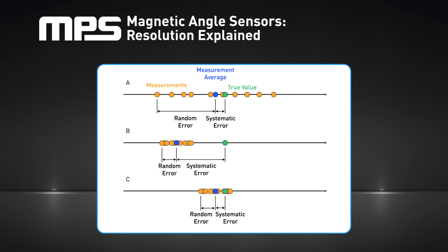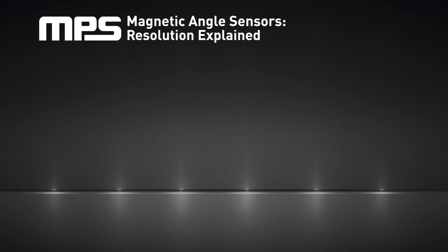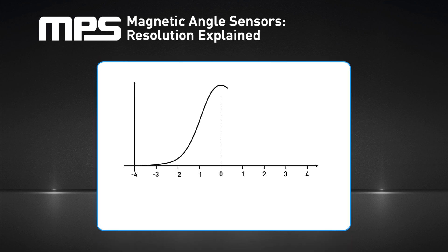The second is random error, which is the total error minus the systematic error. It accounts for the unpredictable variations in a group of measurements performed under the same conditions. A metric that can be used to quantify the amount of random error in a measurement is the standard deviation.